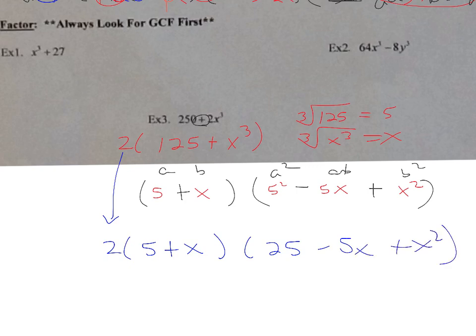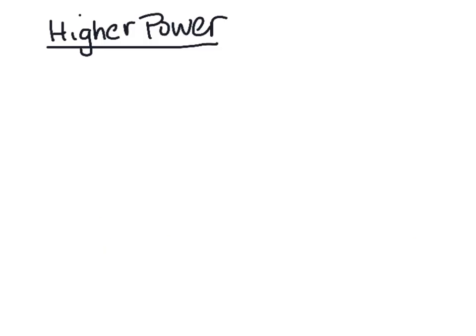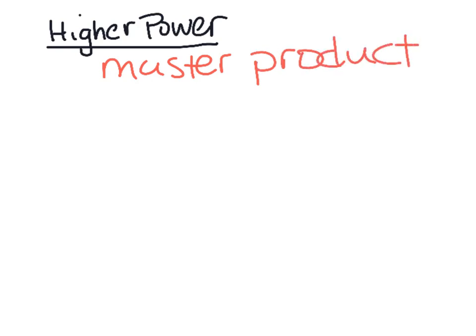That's it with the sum and difference of perfect cubes. Now let's talk about higher-order polynomial trinomials. We're still going to use the master product method. Our first example is x⁸−2x⁴+1.